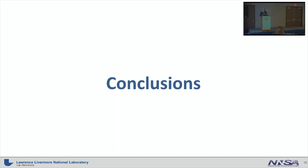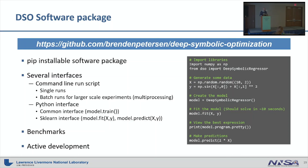We have a public-facing GitHub repository, so you can download the software. It is pip-installable and we provide several interfaces: command line scripts, and an sklearn-like interface as shown in the example on the slide. We also provide a number of standard benchmarks including our own results, and we are actively developing the repository as we push out new capabilities and new papers.